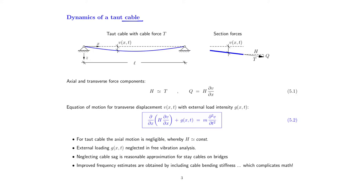Dispersive vibrations mean that the wave velocity depends on the wavelength — not the case for the wave equation. For the cable and bar, we have the simple D'Alembert solution. Let's look at the cable: mathematically, it is our simplest case, represented by the wave equation. We have a cable of length L with deflection V, which is a function of both X and T — two independent variables — so we seek a partial differential equation.